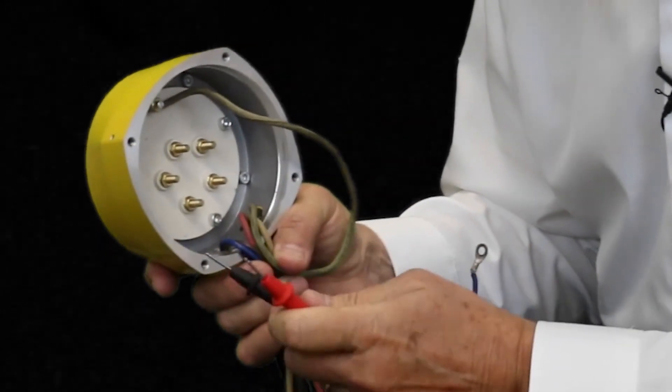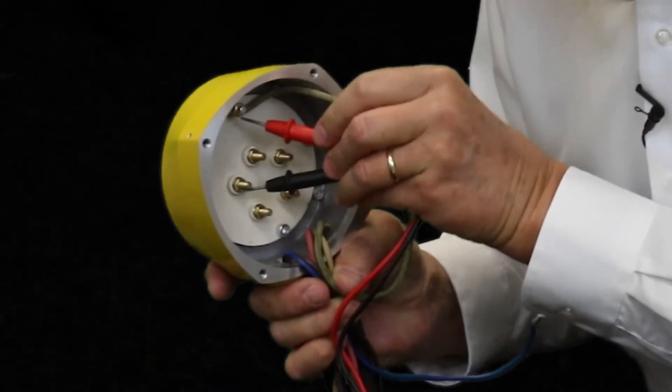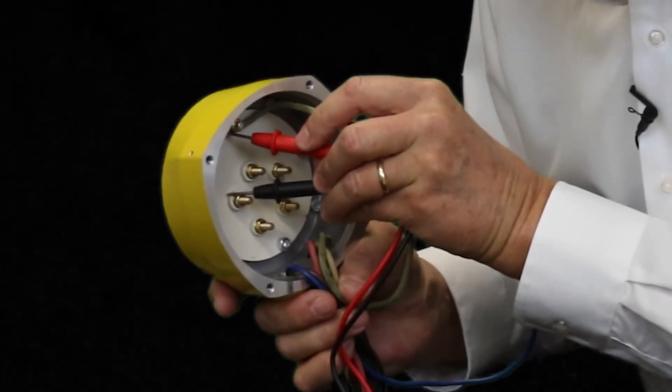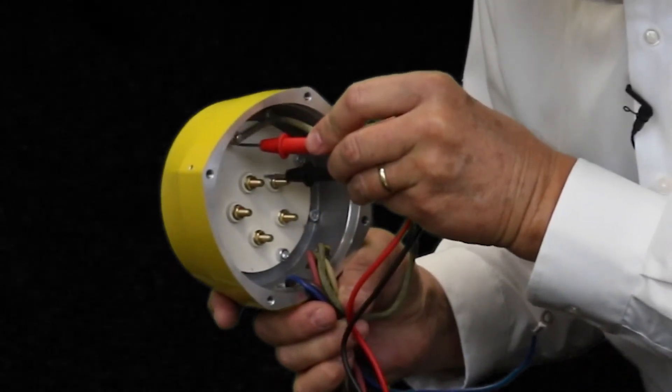To check the resistance between a phase and ground, we put the probes as follows. Between U and the ground lug. V and the ground lug. W and the ground lug.